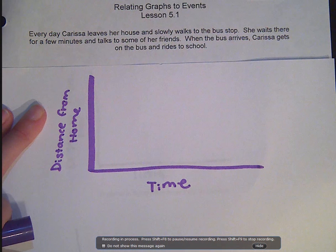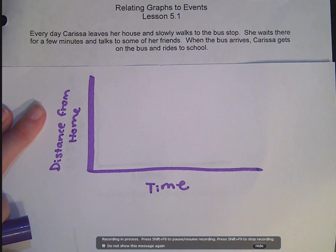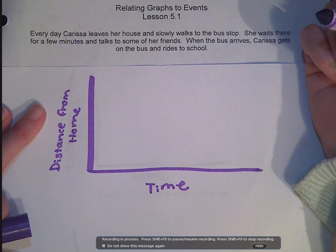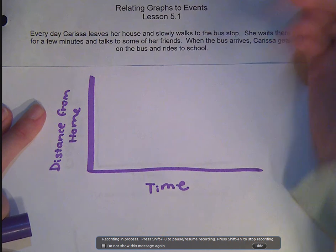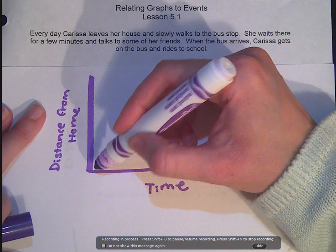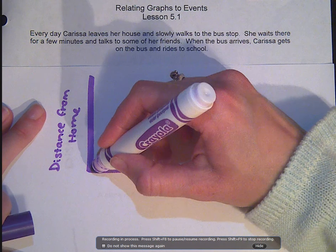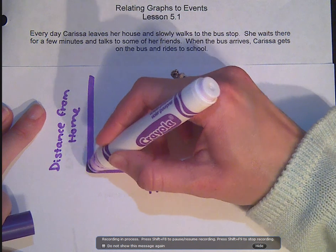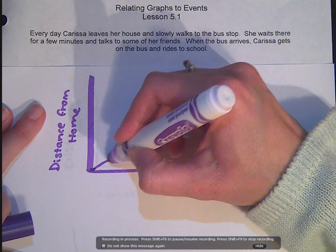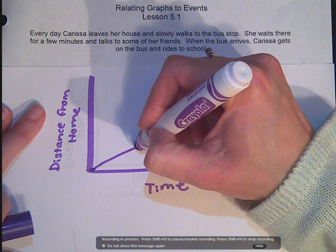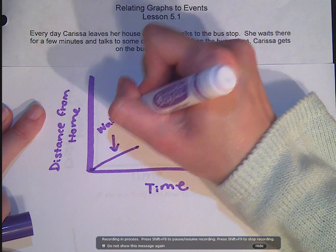First, she leaves her house and slowly walks to the bus stop. Her distance from home is increasing, but it's increasing slowly. She starts at zero — she's at her house — and she's getting further away from home. She's walking slowly, so I'm going to label this part 'walking slowly.'